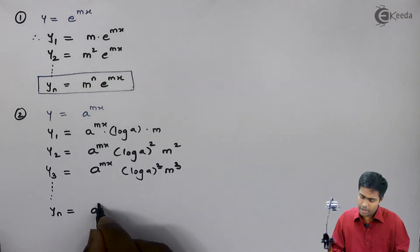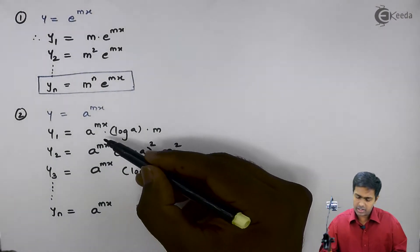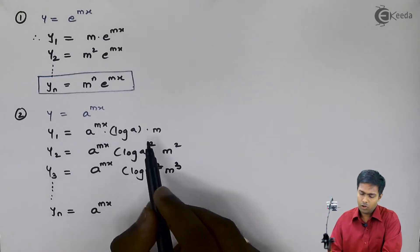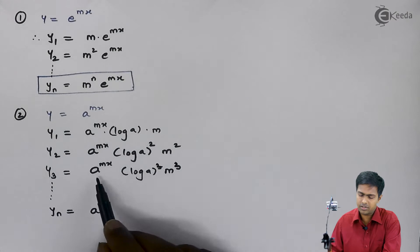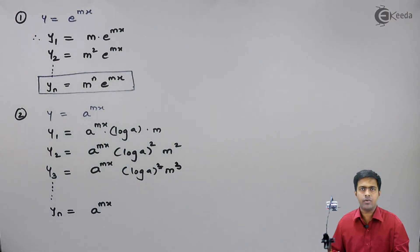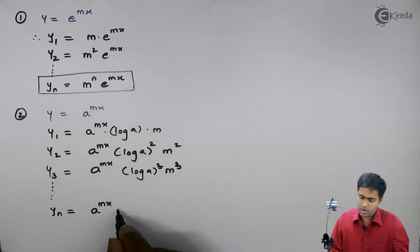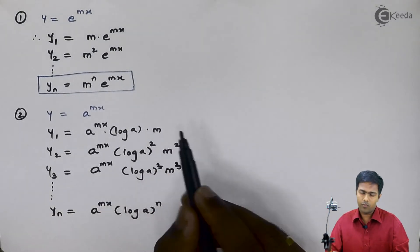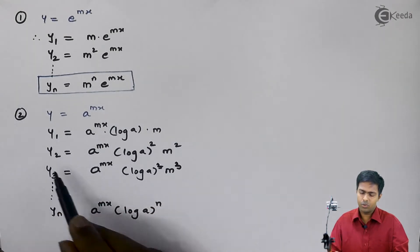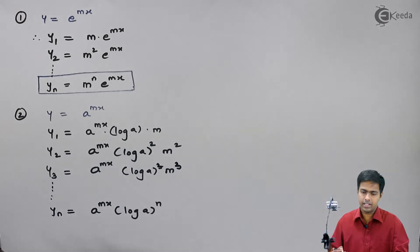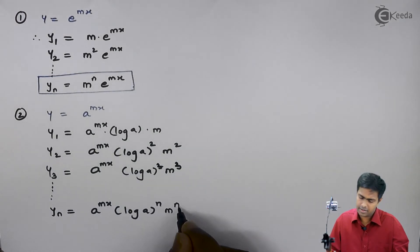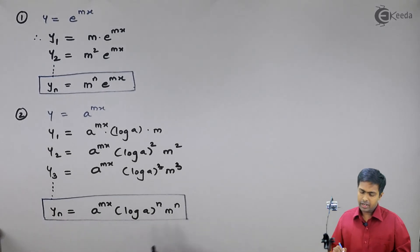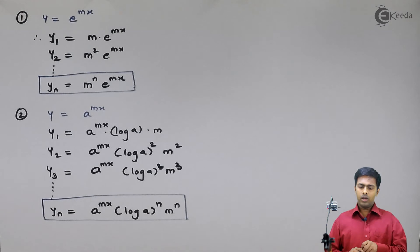Predicting the nth derivative: the term a raised to mx appears in all derivatives. In y1 log(a) has power 1, in y2 power 2, in y3 power 3, so in yn it will be log(a) raised to n. Similarly, m has power 1, 2, 3 in y1, y2, y3, so yn will have m raised to n. The formula for the nth derivative of a raised to mx is: yn equals a raised to mx times log(a) raised to n times m raised to n.